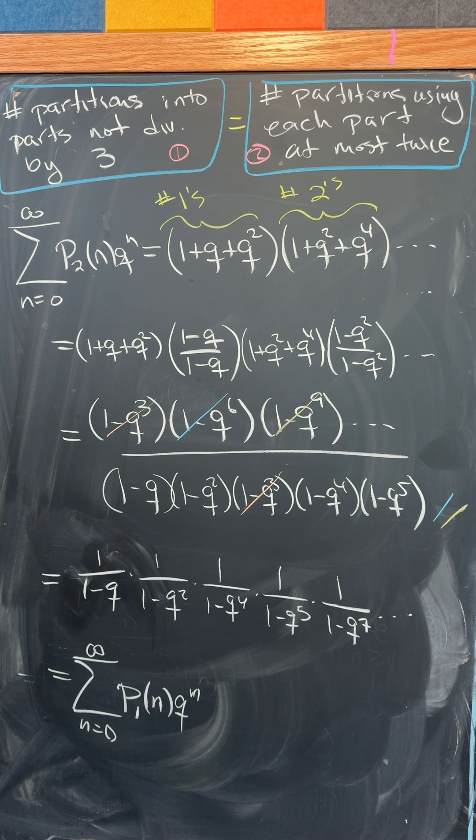But after canceling a bunch of stuff, observe that what's left is 1 over (1 minus q), 1 over (1 minus q squared), 1 over (1 minus q to the 4th). We're missing all of the parts that are divisible by 3, giving us the generating function for the left-hand side.